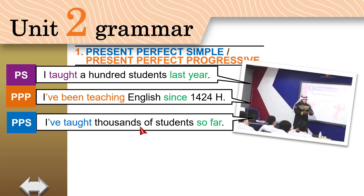We use past simple for actions — things that happened in the past and finished. Completed in the past, and the time they finished is mentioned. When did you teach a hundred students? I did it last year. We know the time it finished.